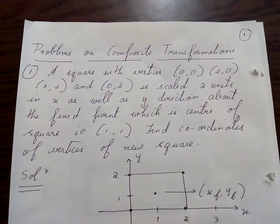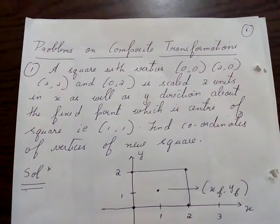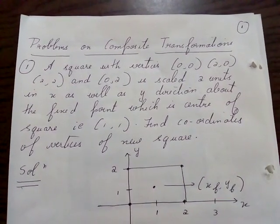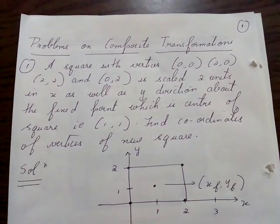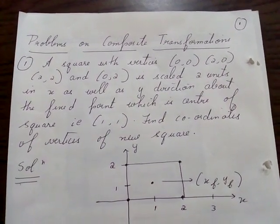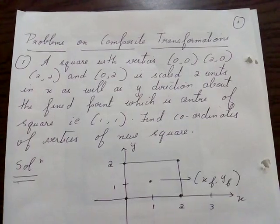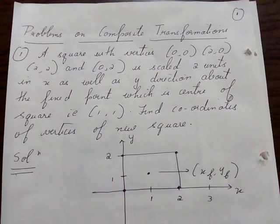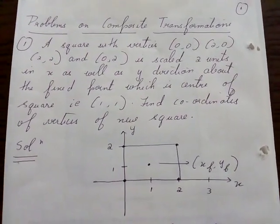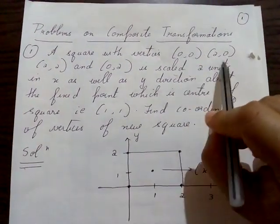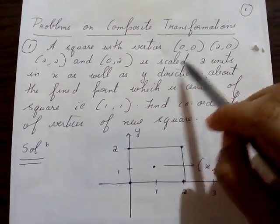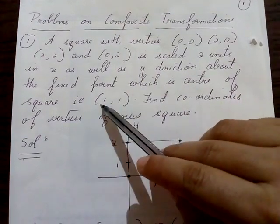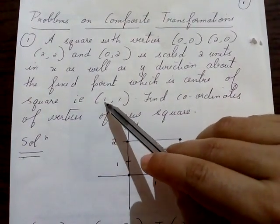Let us see another problem on composite transformation, which is on scaling. The question is: a square with vertices (0,0), (2,0), (2,2), and (0,2) is scaled 2 units in both the x and y directions about the fixed point which is the center of the square, that is (1,1). Find the coordinates of the vertices of the new square. They have given sx = 2, sy = 2, and the fixed point is (1,1).